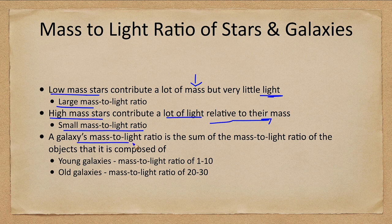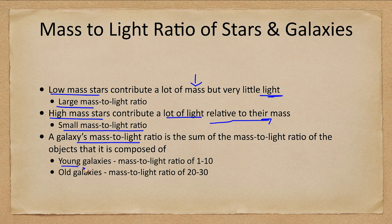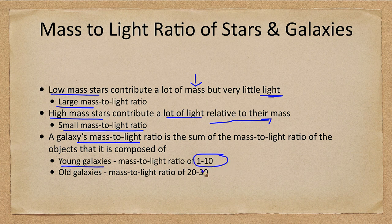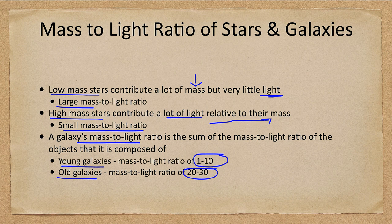That ratio is really just added up from all the objects that it is composed of. So very young galaxies with lots of very hot, bright stars would have a low mass to light ratio, maybe in the order of 1 to 10. An old galaxy without those hot young stars would have a mass to light ratio in the range of say 20 to 30.